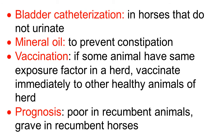If the horse is unable to urinate, provide bladder catheterization. Botulism causes paralysis of the gastrointestinal tract and constipation; to prevent that, give mineral oil. In a herd, if some animals have been exposed and are showing symptoms, immediately vaccinate the other healthy animals before they develop symptoms — this can prevent the disease. Prognosis is very poor in recumbent animals, and grave in recumbent horses. Early treatment with specific antitoxin, supportive therapy, and fluid therapy helps the animal to recover.